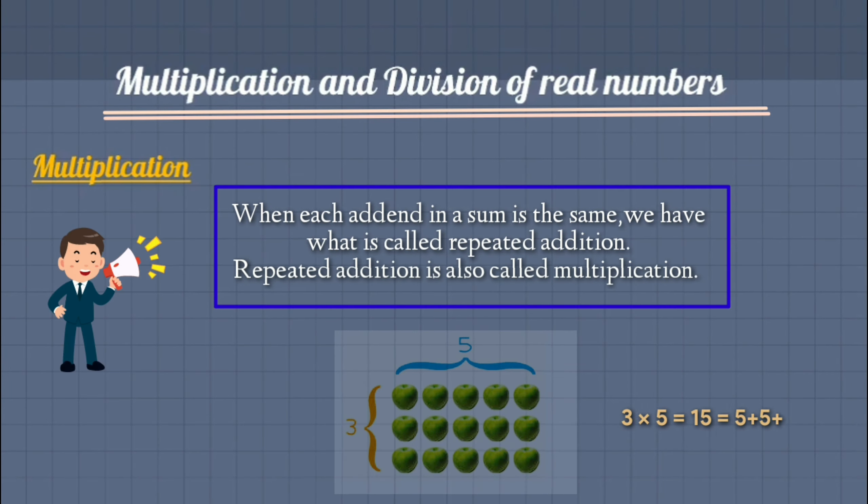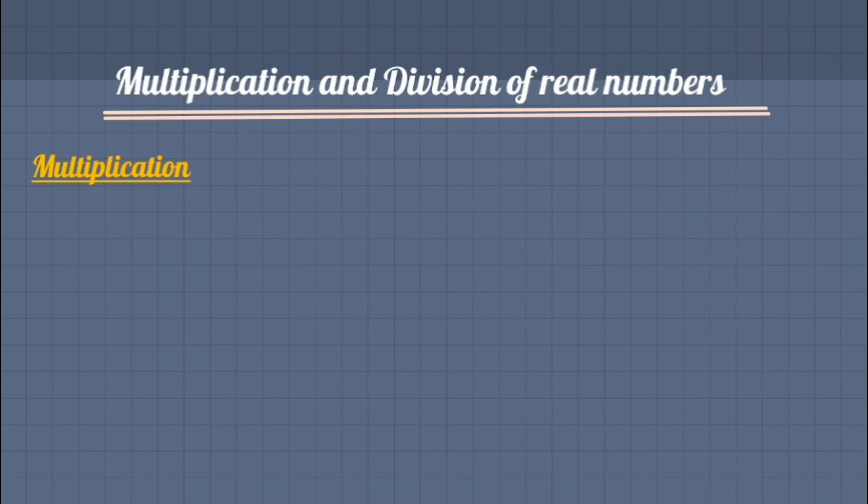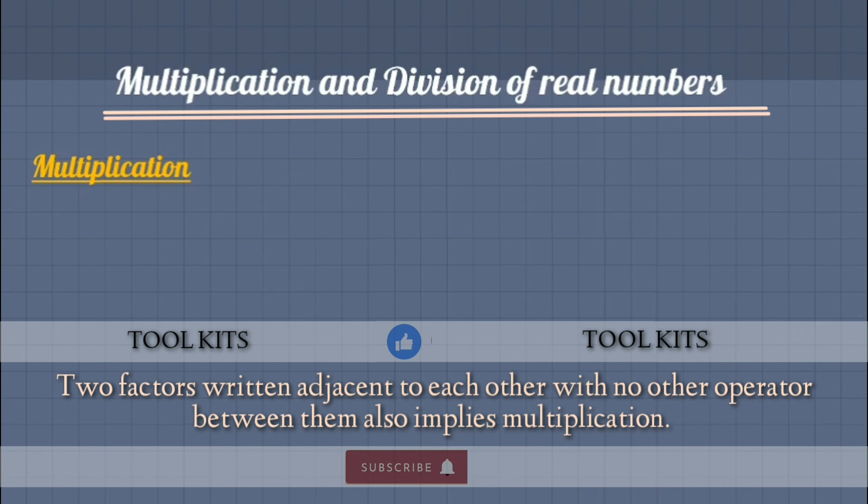Multiplication is the process of combining the groups. The result of multiplication is called product. And we use these symbols to express multiplication.